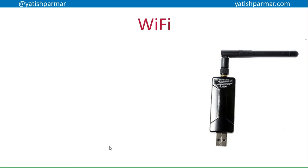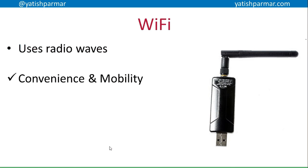Wi-Fi — you might have one of these in the back of your PC, or if you've got a laptop, the antenna are built into the device nowadays. Wi-Fi uses radio waves to transfer data. It's all quite easy to set up nowadays — just turn it on, find your network, type in the key, and off you go. The software and operating system handles everything for you.